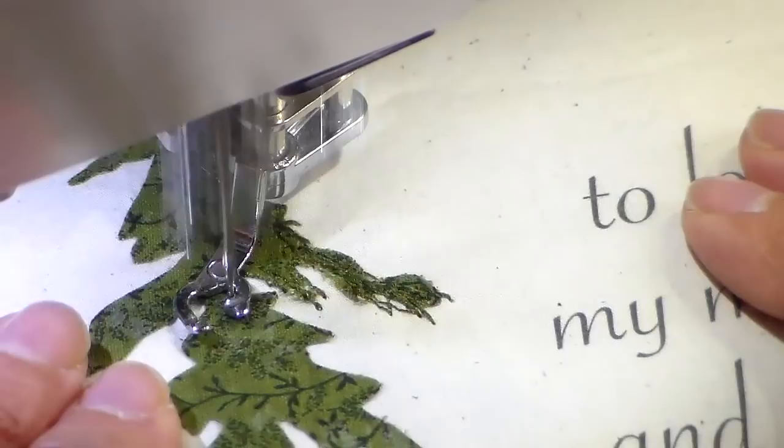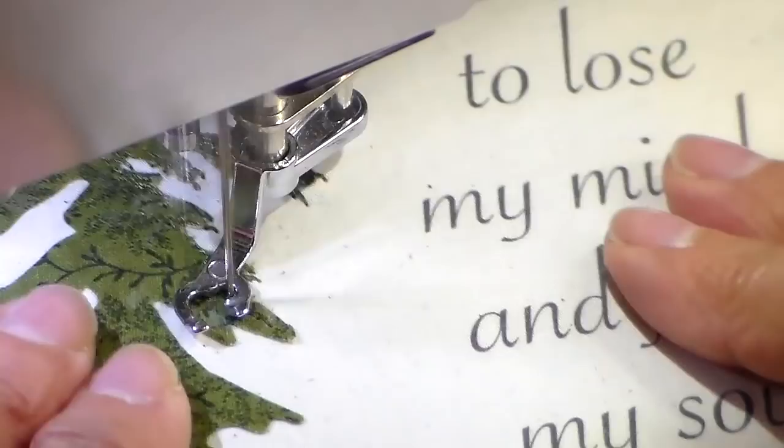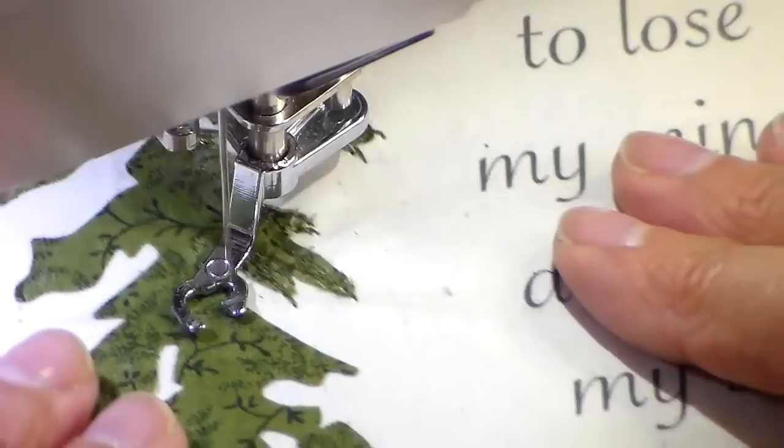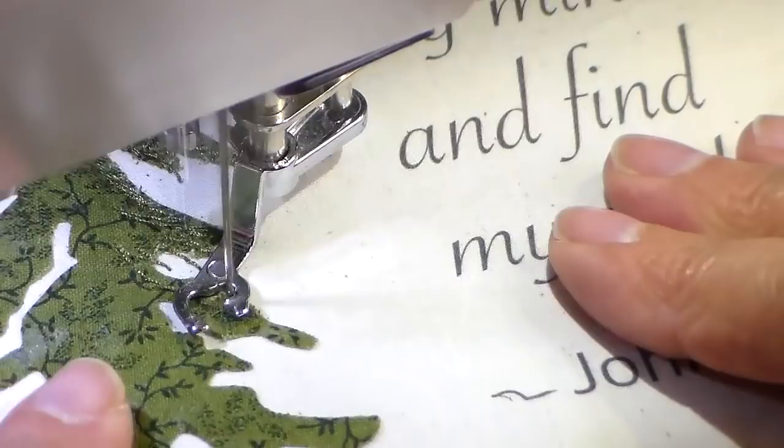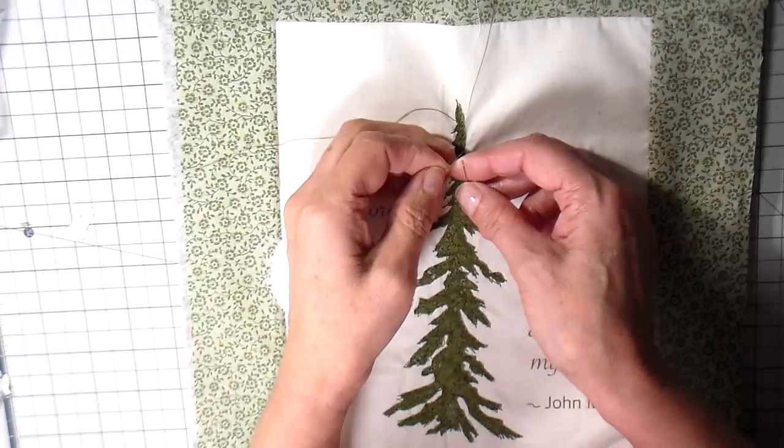If you're not comfortable with free-motion stitching, you can also do this with your regular foot and just go five or six stitches forward and then reverse your stitches and just keep going back and forth. You will have to turn your work more when you do it that way, but it is doable. And then again I am just going to thread paint all the way around the edge of my tree. Getting those threads to the back just using a self-threading needle for this. It just kind of makes it a little bit easier to do.